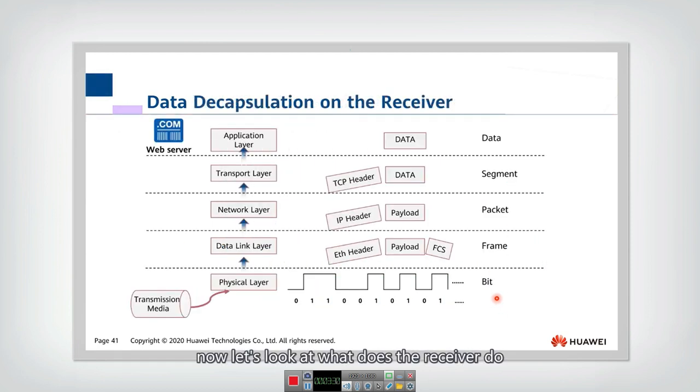Now let's look at what does the receiver do. The receiver will receive the signals, that is a zero-one bit stream. Then they will do the decapsulation. They will check the header and tail. If it's correct, then they will send the payload to the upper layer. And this layer, they will also check the header.